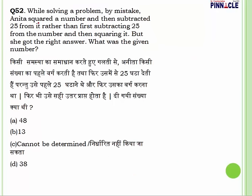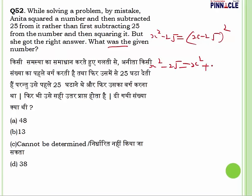Question number 52: while solving a problem, by mistake Anita squared a number and then subtracted 25 from it — that is x squared minus 25 — rather than first subtracting 25 from the number and then squaring it. But she got the right answer. So x squared minus 25 equals (x minus 25) squared. Expanding: x squared minus 25 equals x squared plus 625 minus 50x. Cancelling x squared, we get 50x equals 650, so x equals 13. Answer is B.